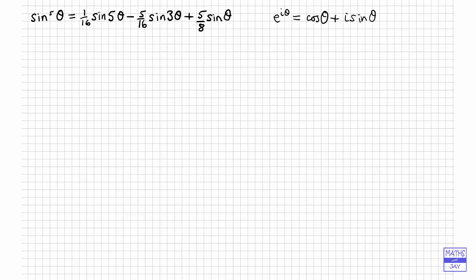Because we've got only sine theta involved in the identity that we're proving, we don't want the cos theta there. So what we're going to do is rewrite Euler's formula, replacing the theta by negative theta. That will give us e to the minus i theta, and cosine of negative theta is the same as cos theta, because cosine is an even function, so we've got cos theta as before. But sine of negative theta is minus the sine of theta, so we've then got minus i sine theta.